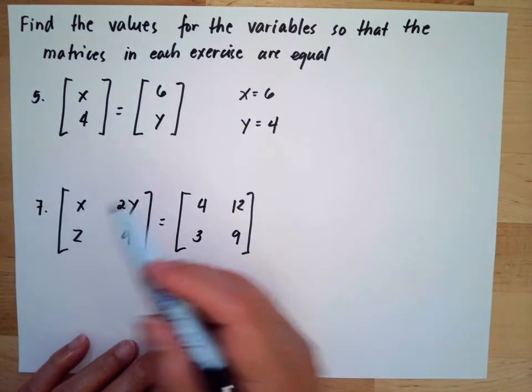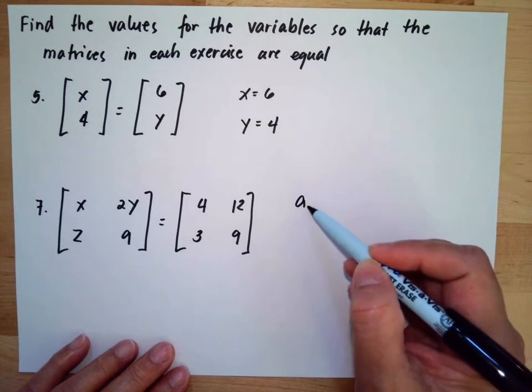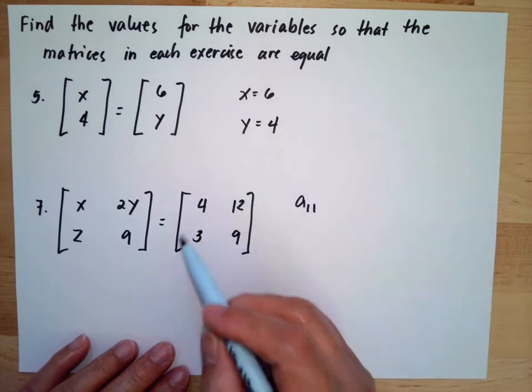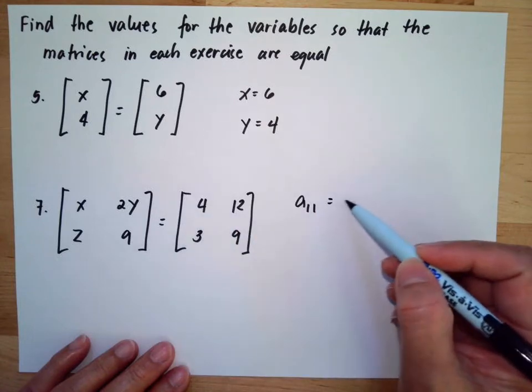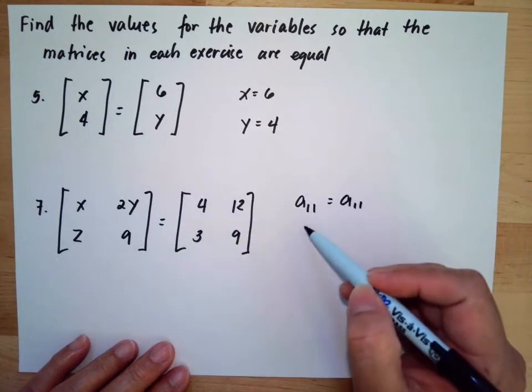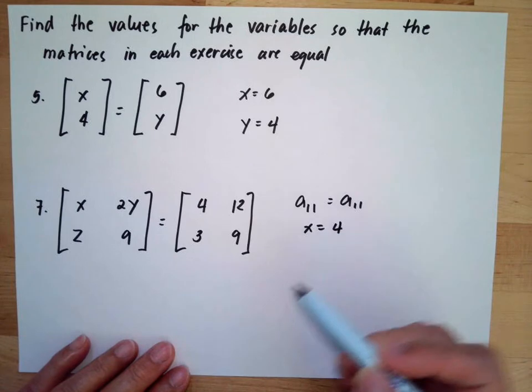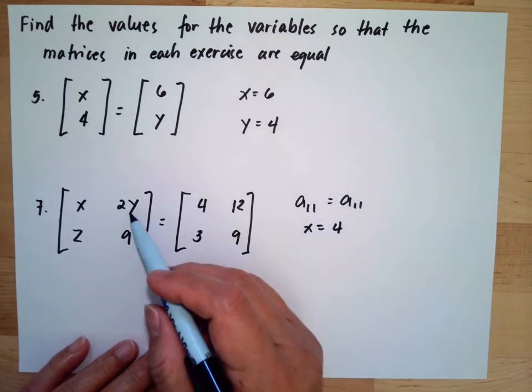Then here we have x in column one, so we have row one, row two, and here the row one, row two is equal to four, so they should be equal, meaning x is equal to four.